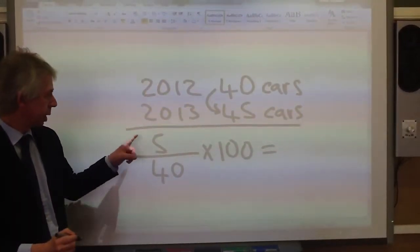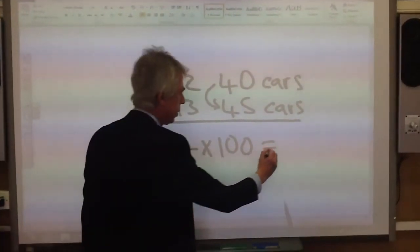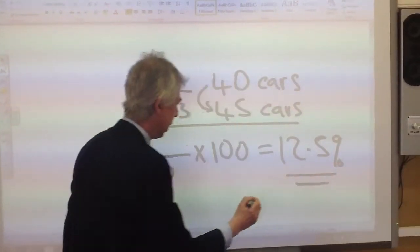And if you use your calculator and do 5 divided by 40 times 100, you should find that that will come to 12.5%.